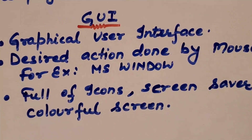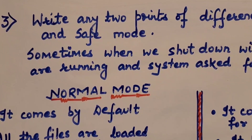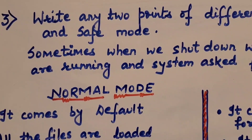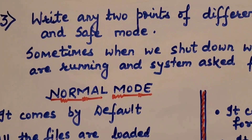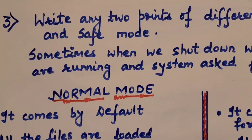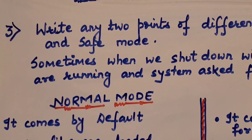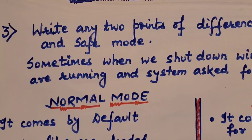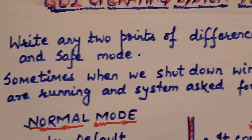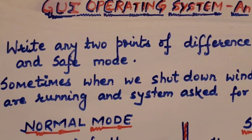Now we have reached the last question of this topic. We have reached the third question, which is the last question of this video, and hopefully you will get this chapter easily. Watch this video till the end and note down everything taught — that will be very helpful for your lesson. The third question as you can see on the whiteboard is: write any two points of difference between normal mode and safe mode.